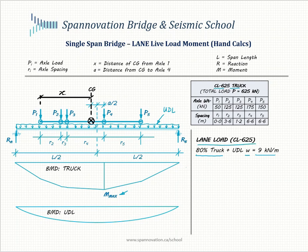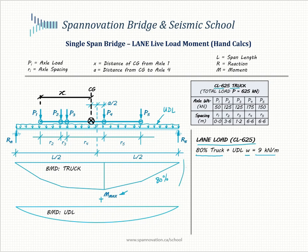Other codes around the world have something similar with a truck component and a uniformly distributed load component. The bending moment diagram due to the UDL is superimposed with the truck load reduced to 80% as per the Canadian code to give the lane loading. To calculate the bending moment due to lane loading, we first determine the reaction RB due to the UDL, which equals W times the total bridge length divided by 2.